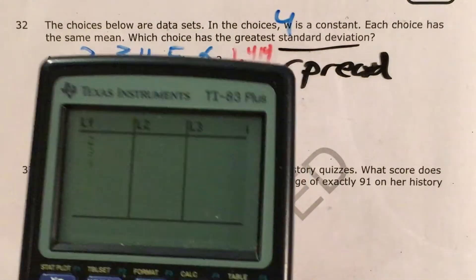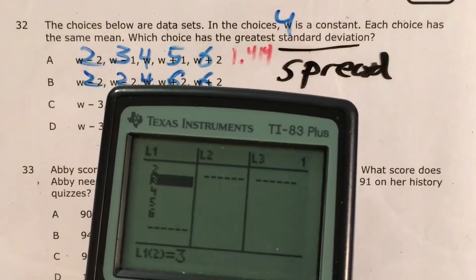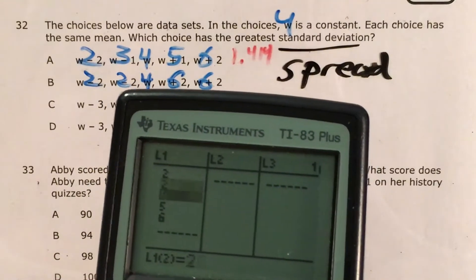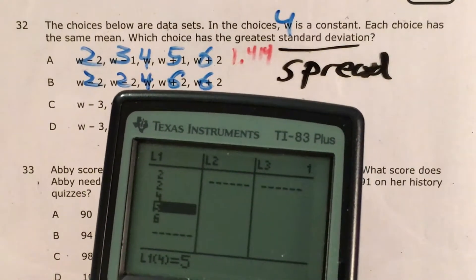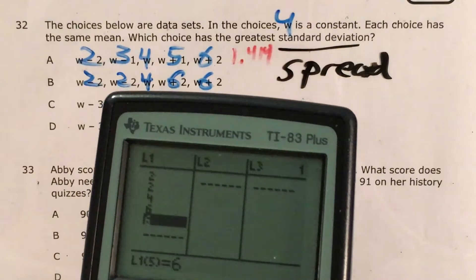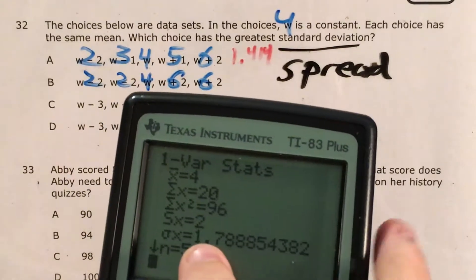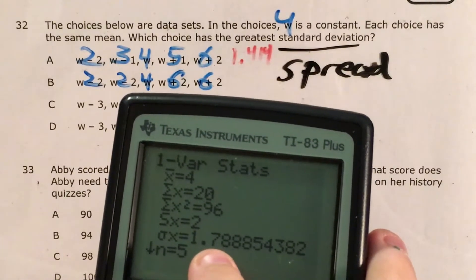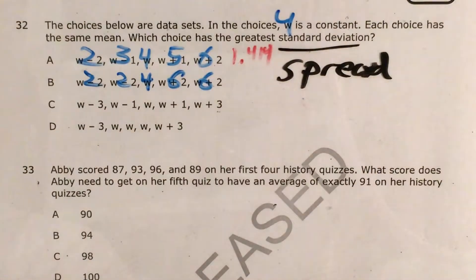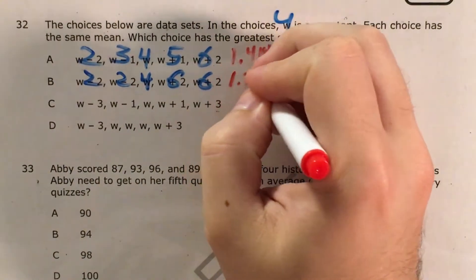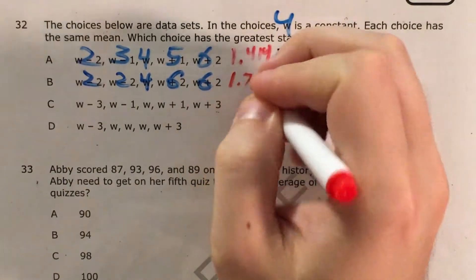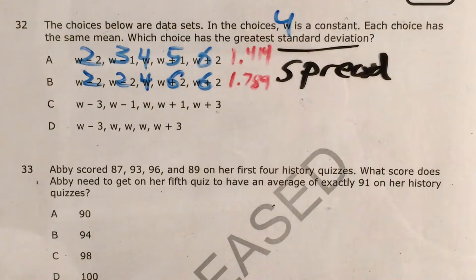So now I go back to stat, change my data, so that instead of 2, 3, 4, 5, and 6, I now have 2, 2, 4, 6, and 6. Stat, calc, one variable statistics. Okay, so I see my standard deviation has gone up a bit. That's going to be about 1.789. So that one's bigger. So my hunch about B being more spread out than A was correct.